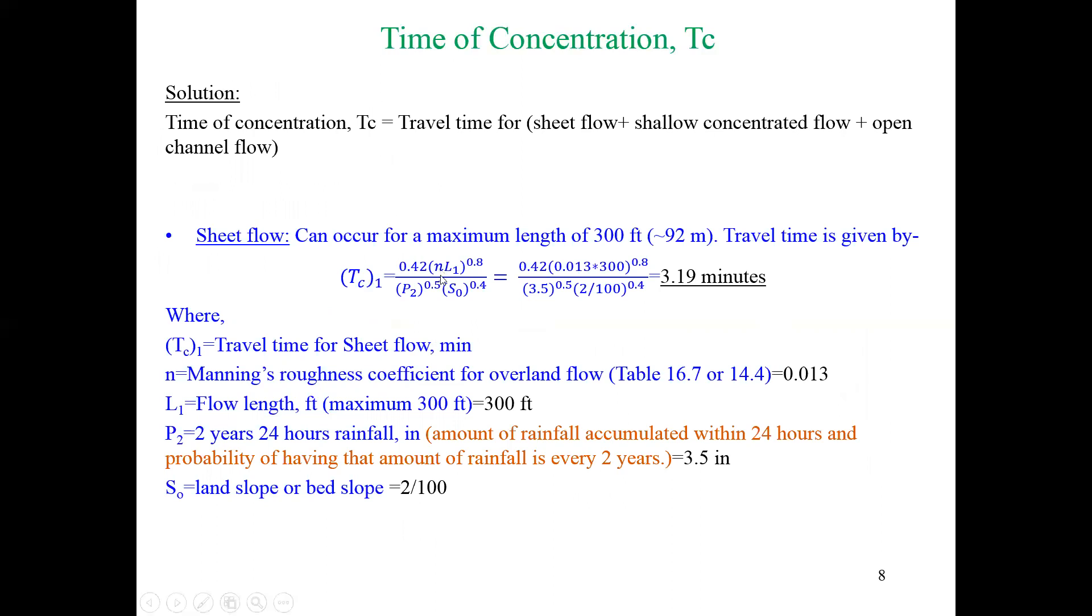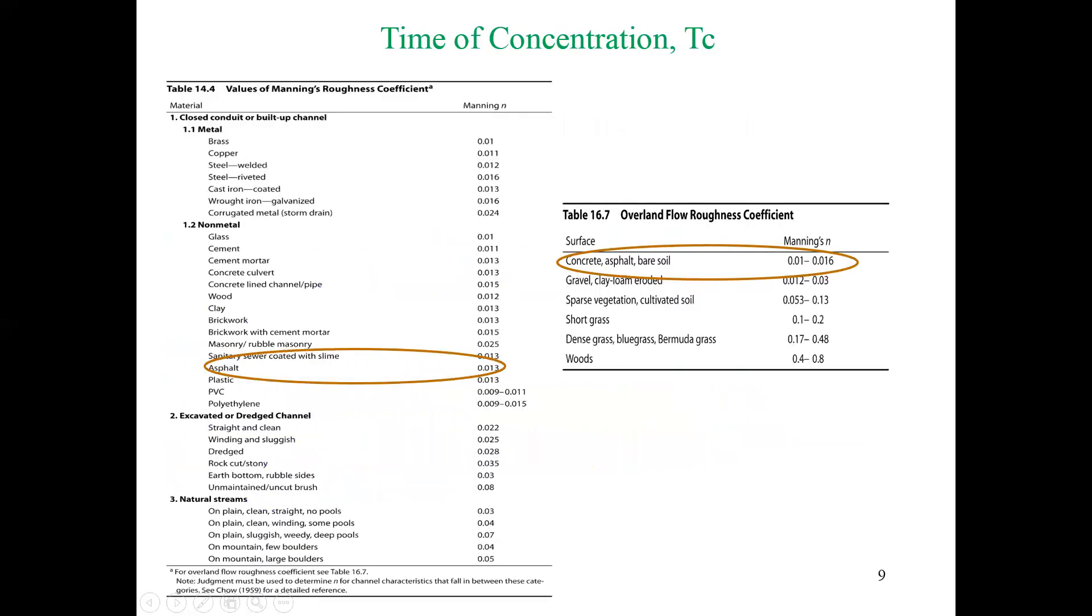Now the last thing is Manning's n. We already know the surface type which is paved with asphalt, so we have two resources to find the n values: either Table 16.7 or 14.4. If we want to use 16.7, the asphalt bare soil has a range of Manning's n from 0.012 to 0.016. Sometimes we may have to use Table 14.4, and from Table 14.4 the asphalt is 0.013. Since there is a specific value, let's use 0.013.